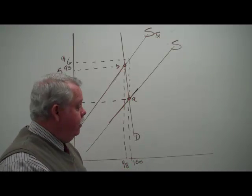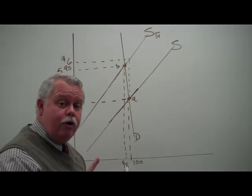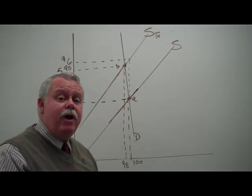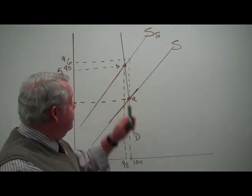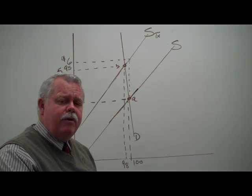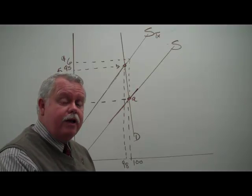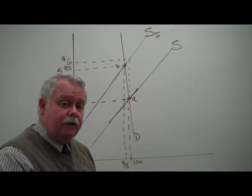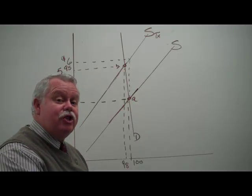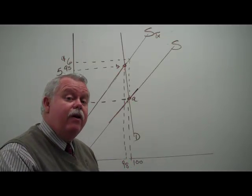What happens now? The government is going to collect $1 per unit for 98 units — $98. They're going to collect a lot of tax. How much is going to be paid by the buyers? $0.95 per unit times 98 units. How much tax is going to be paid by the seller? $0.05 per unit for 98 units. So out of the $98 tax, $4.90 is going to be paid by the seller, and the remainder — $93.10 — paid by the buyers.